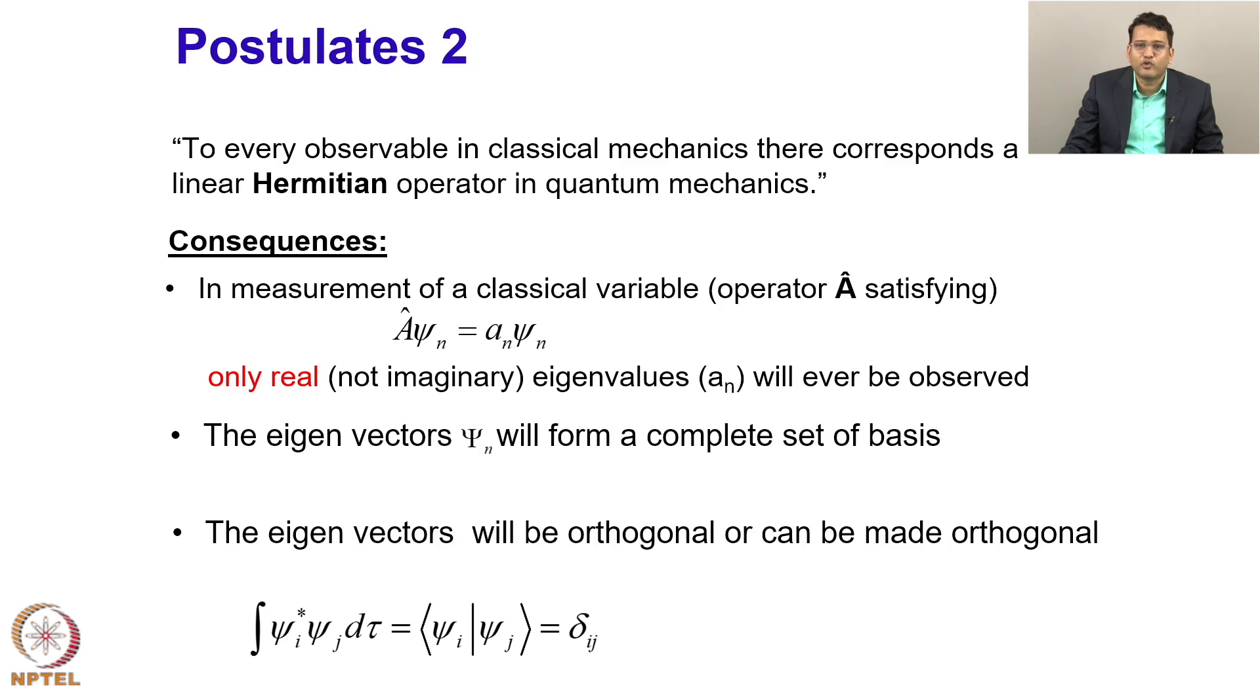And because my operator is Hermitian, the eigenvectors will form a complete set of basis. This is the property we are going to use multiple times in computational chemistry, and the eigenvectors will be orthogonal or can be made orthogonal. So when we say ground and excited states are orthogonal, that's just the consequence of the fact that my operator is a linear Hermitian operator.